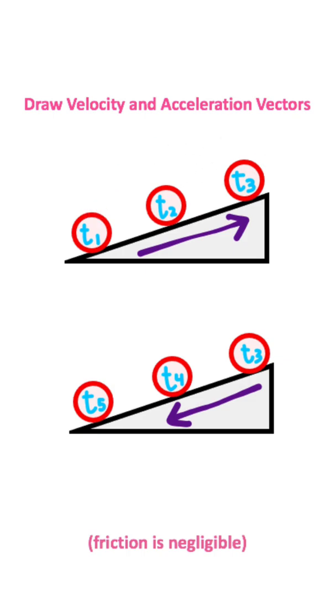The velocity vectors when we travel up the ramp are going to look like this. Notice velocity gets smaller and smaller until we reach the split second before the ball starts to roll back down.